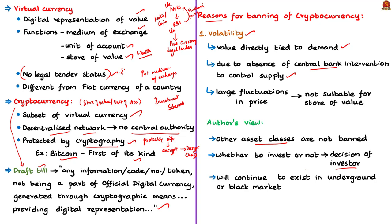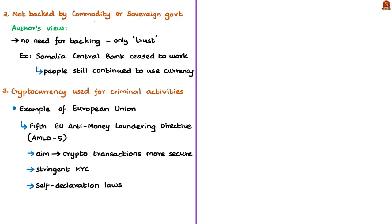Once cryptocurrencies are banned, an underground market for them will emerge. The government cannot track or tax it for revenue. The authors argue the government should have come up with a regulatory framework for cryptocurrency rather than banning it — for example, a tax on capital gains from investing in crypto assets, similar to taxes on investments in other assets.